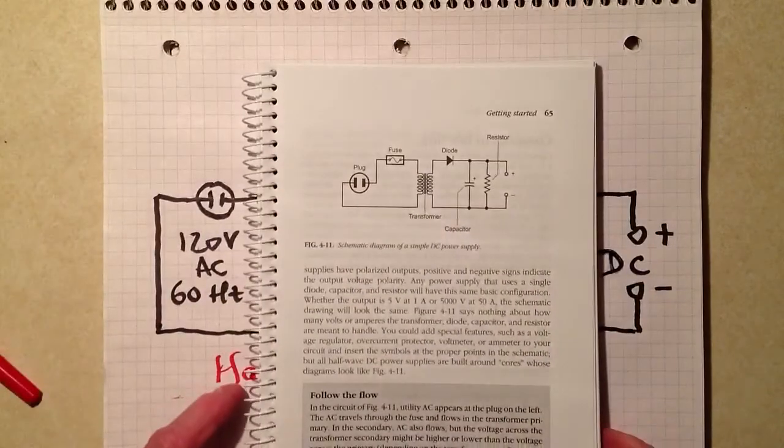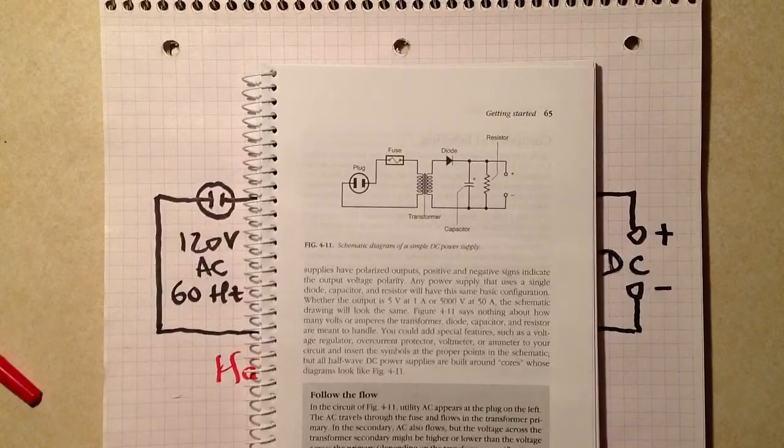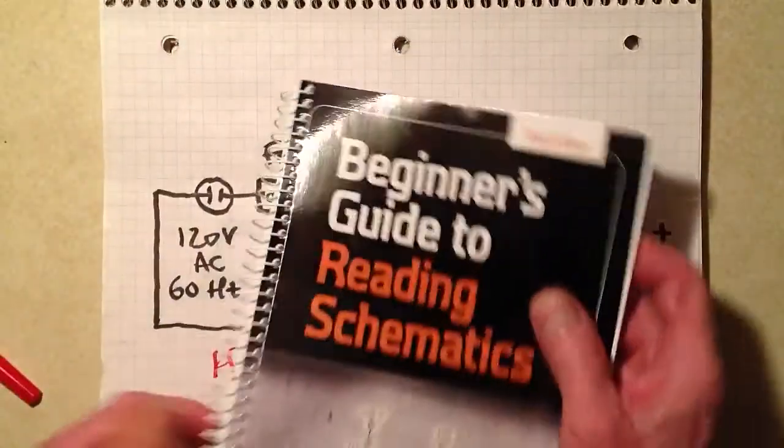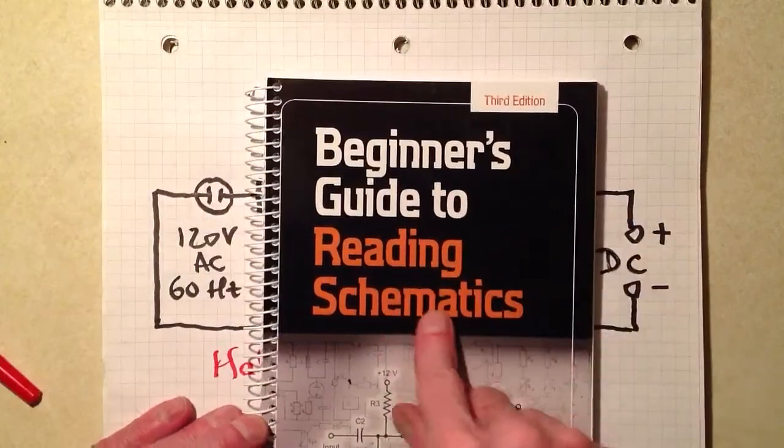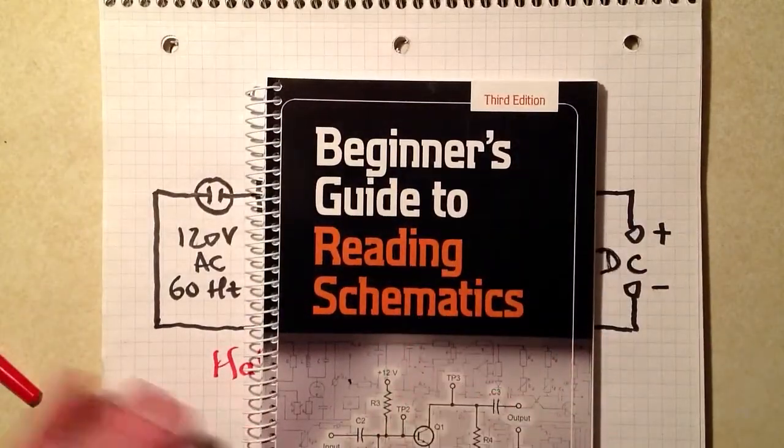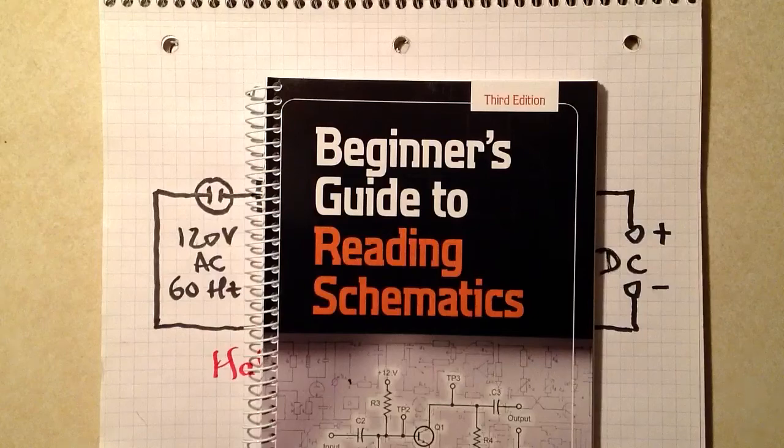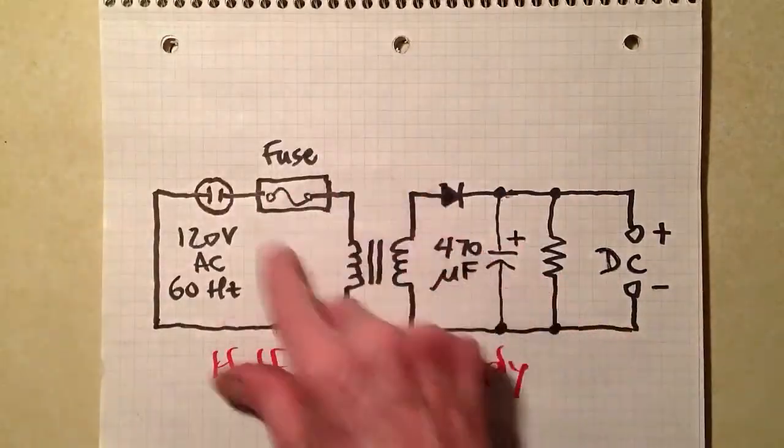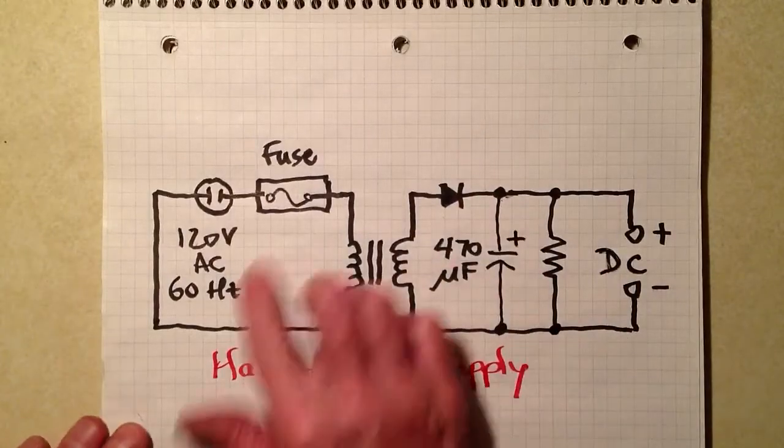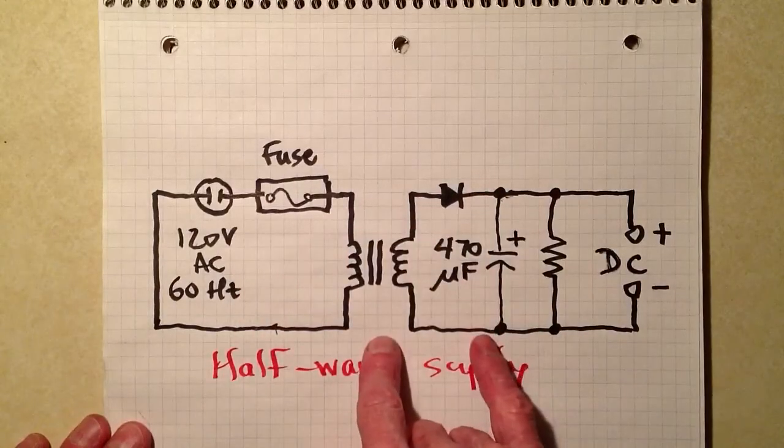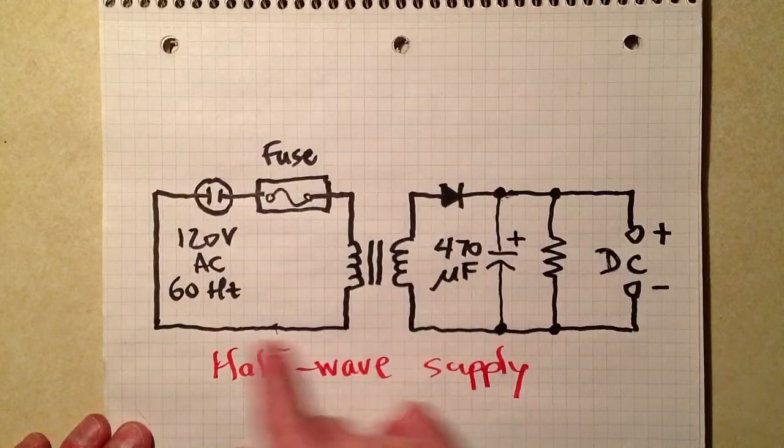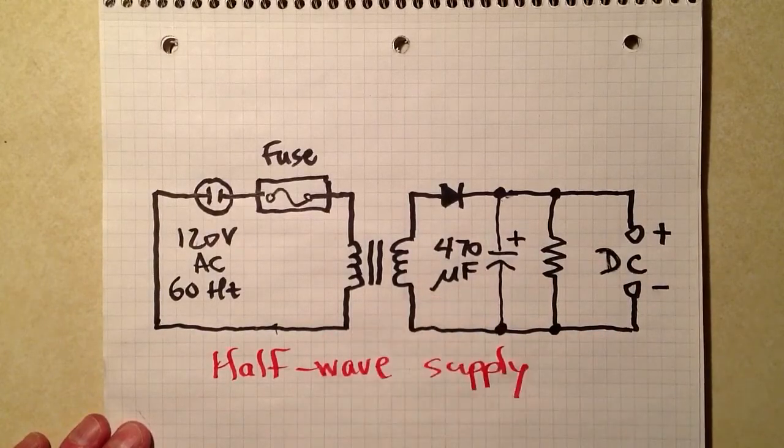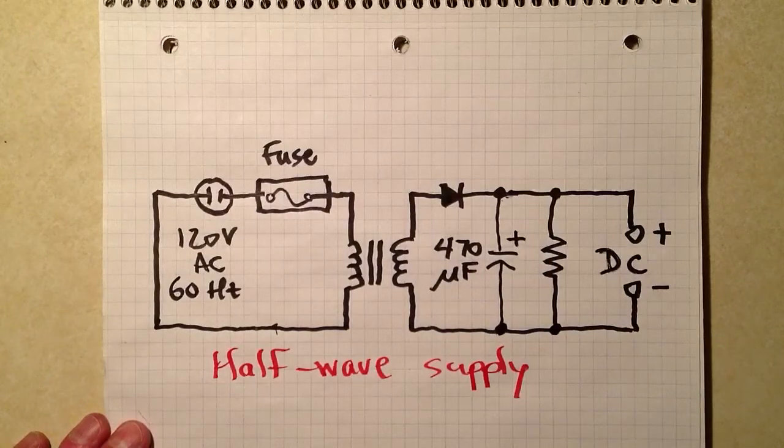Again, that's figure 4-11, which you will find on page 65 of Beginner's Guide to Reading Schematics. It's also a guide to drawing schematics, by the way. And I didn't in the book mention about the quadrille paper, but see how at least the lines are relatively aligned. I'm not real good at drawing absolutely perfect straight lines without a straight edge, but this is good enough. You can see what's going on, right?